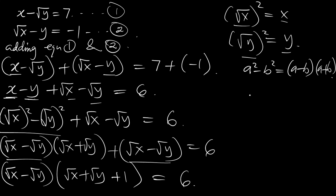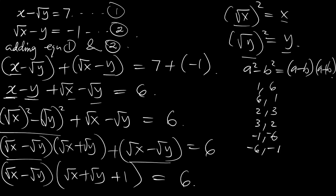Now, what are the two factors of 6 that when multiplied together give 6? So we have: 1 and 6, 6 and 1, 2 and 3, 3 and 2, minus 1 and minus 6, minus 6 and minus 1, minus 2 and minus 3, minus 3 and minus 2.